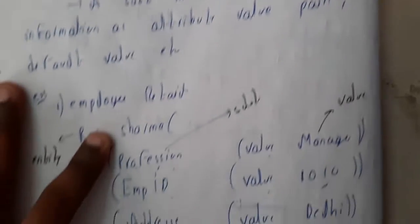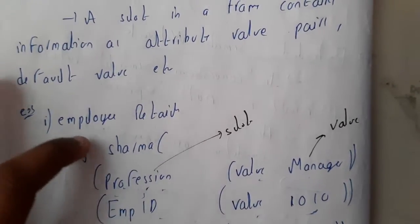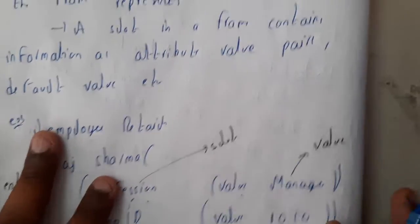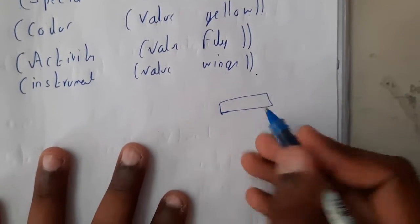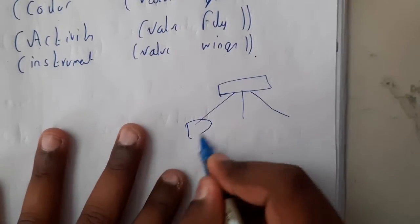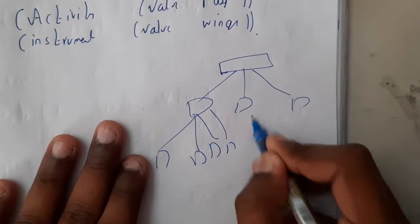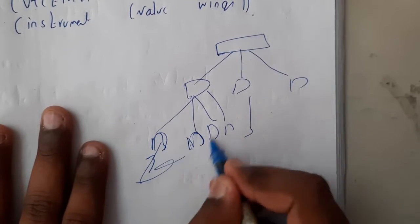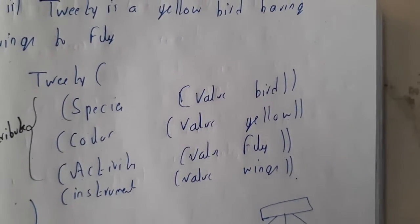We can even represent this in terms of graphical format also. Let us assume you are having 100 employees. This will be your employee or your college name. In that, different departments, so each department is having the particular employees and their details like that. You can even represent in the graph format.